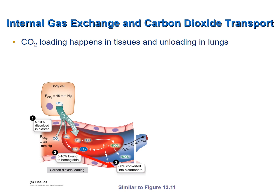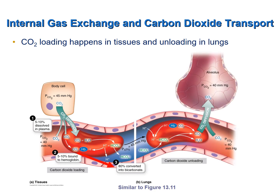Deoxygenated blood leaving the systemic capillaries has the same partial pressure of carbon dioxide as the interstitial fluid, because equilibrium is reached between the blood and interstitial fluid. That deoxygenated blood is then transported to the pulmonary capillaries, where carbon dioxide is reformed from bicarbonate ions and hydrogen ions, and then diffuses down its partial pressure gradient into the alveoli during external respiration, as previously described.